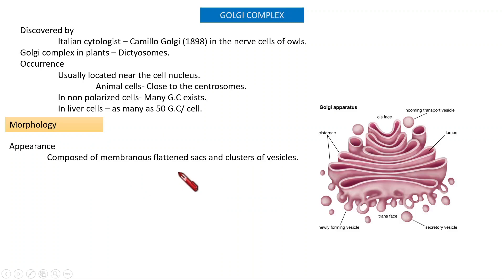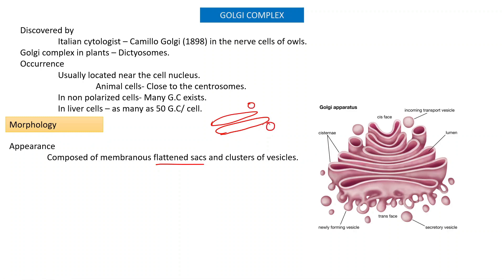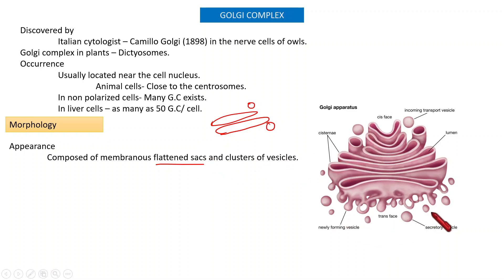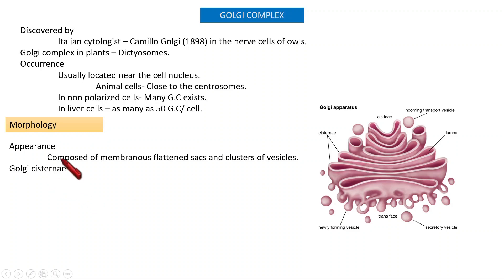Regarding morphology — the Golgi complex appears as many flattened sacks placed one over the other, along with an aggregation of vesicles. As observed under a microscope, it appears as a collection of flattened sacks and a cluster of vesicles.